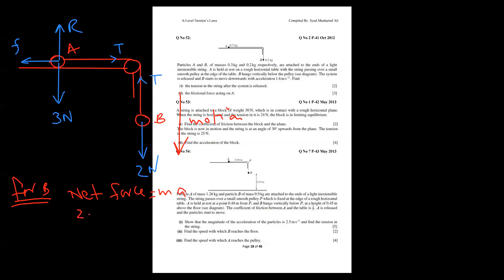So 2 minus tension equals ma. Mass of the B particle is 0.2, so 0.2 times acceleration - and acceleration given by him is 1.6. So tension goes there: 2 minus 0.2 times 1.6, and the answer is 1.68 newtons. So you took these two marks in no time.